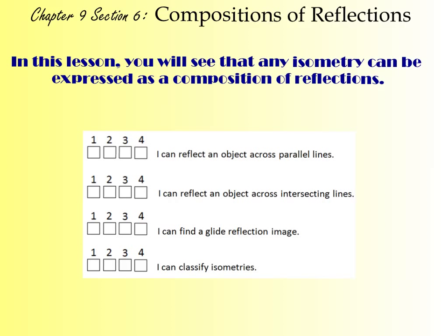In section 9-6, we're going to be looking at compositions of reflections. We're going to see what happens when we reflect an object over parallel lines and also over intersecting lines. We are also going to look at what a glide reflection is, and we will look at some different isometries.